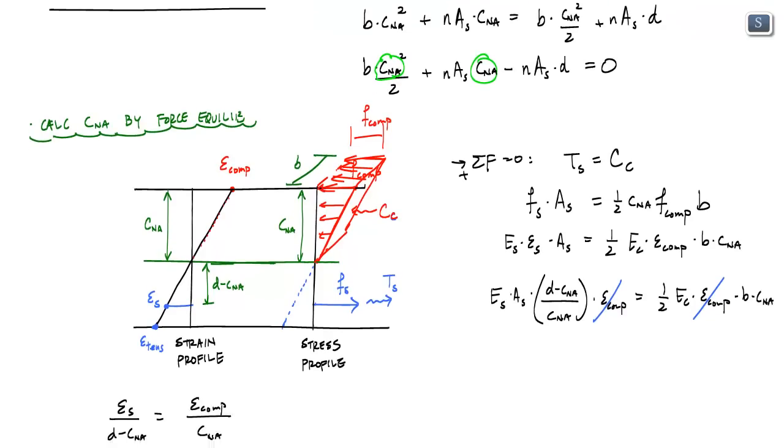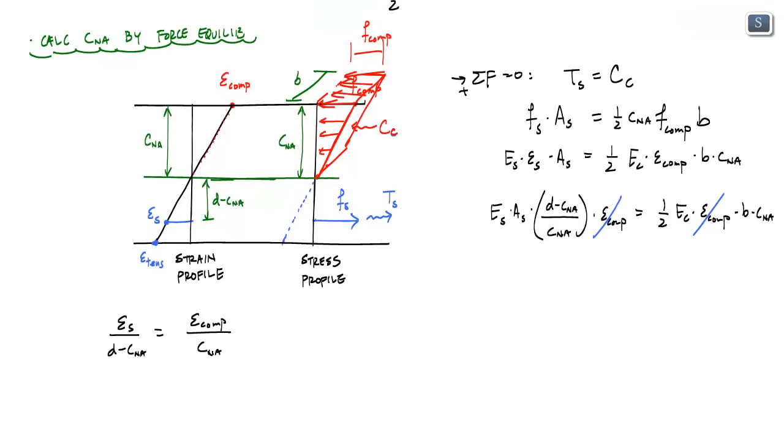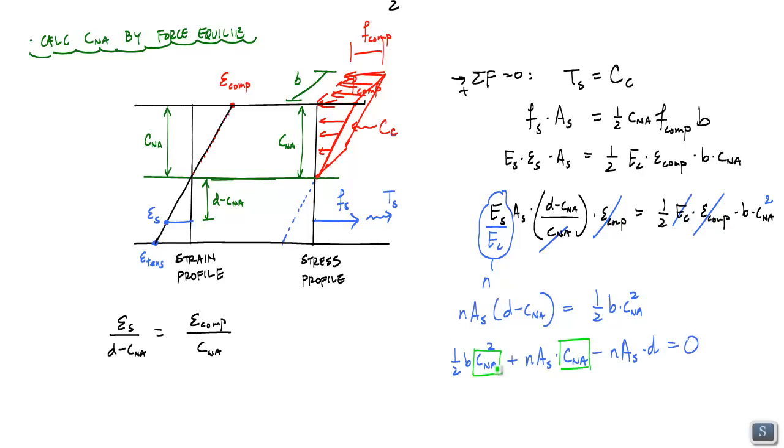And this equation is the same as that we have up here. And the way I can show that to you is I need a modular ratio. So if I divide both sides by EC, this term right here is my modular ratio on this AS. And if I multiply both sides by CNA, this becomes CNA squared. What I'm left with is, and if I can work this out, I can rearrange this, and again, one equation, one unknown.